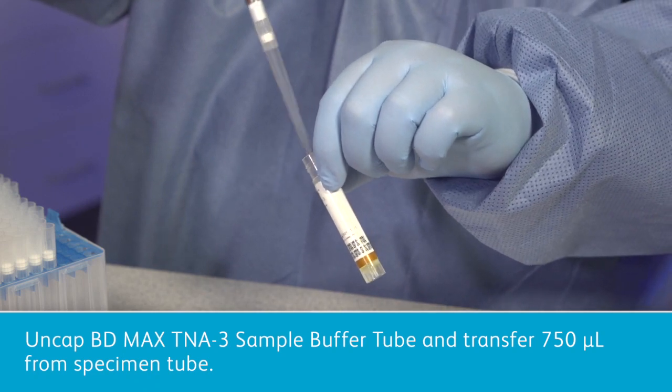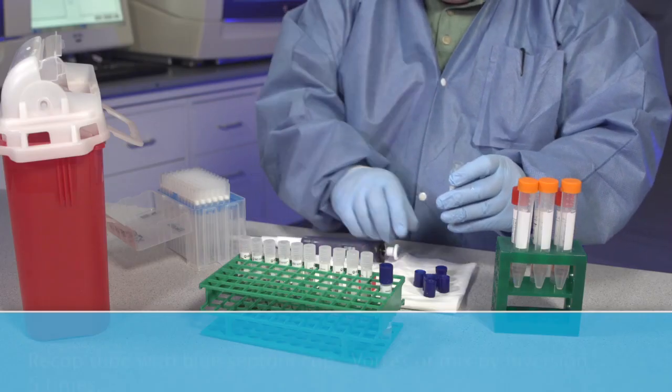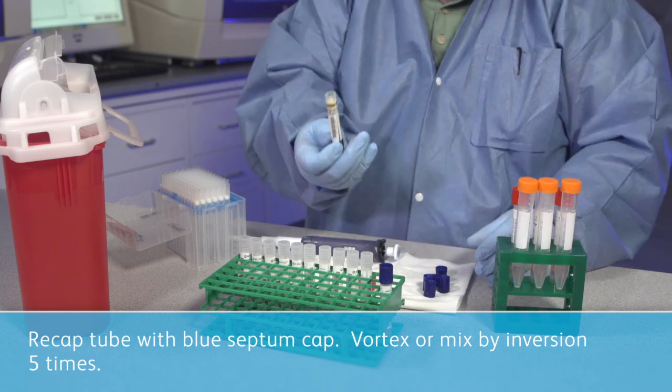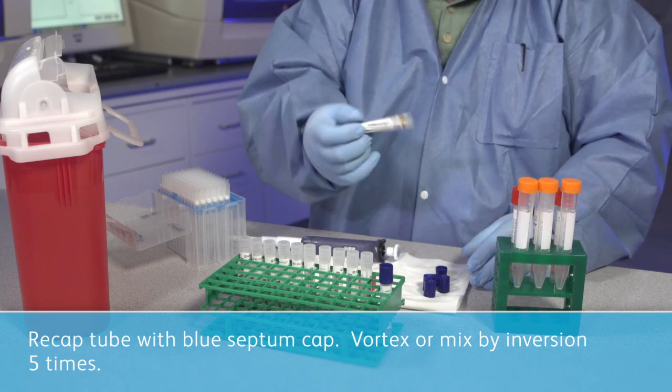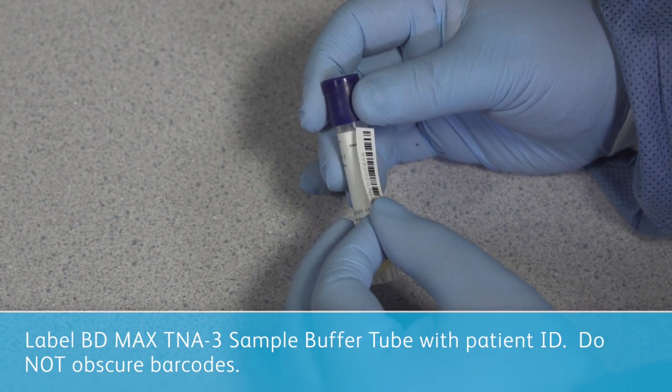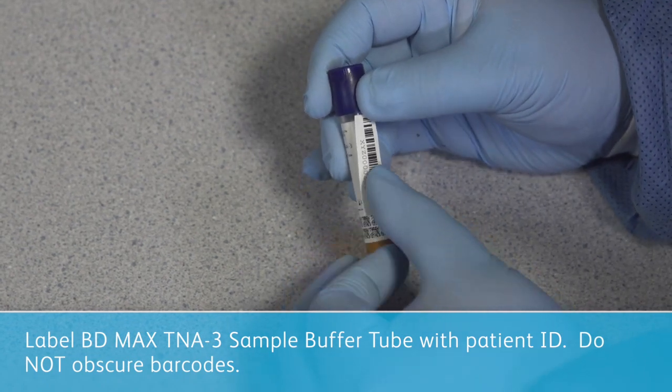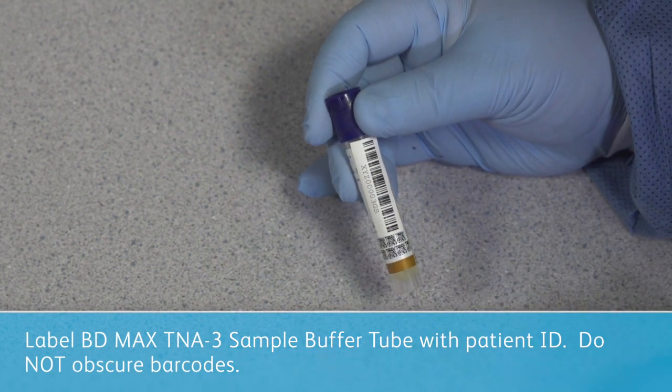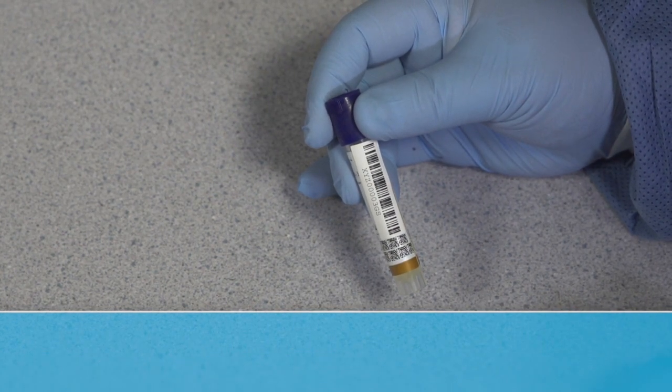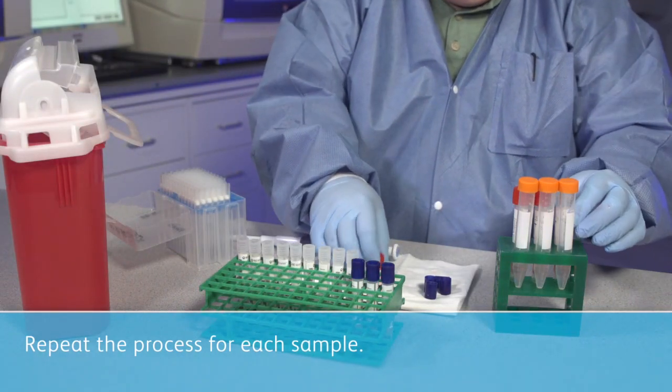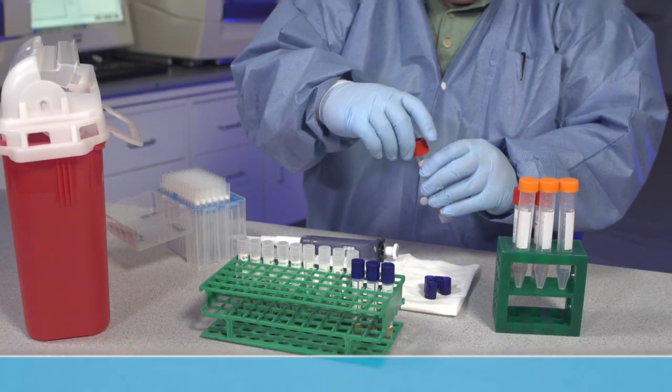Then, recap the tube with a blue septum cap and vortex or mix by inversion five times. Label the BD-Max TNA-3 sample buffer tube with patient information. Remember, do not obscure the barcodes on the tube as it may result in a BD-Max system catalog failure and an inability to test the sample. Repeat this process for each UVT or UTM or saline sample that will be tested on the BD-Max system.